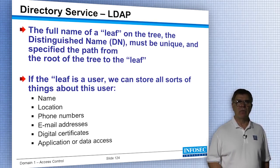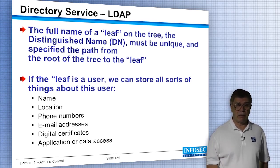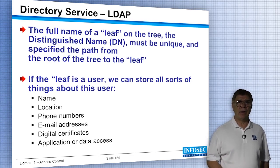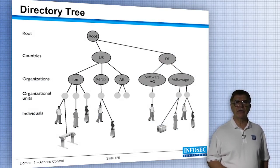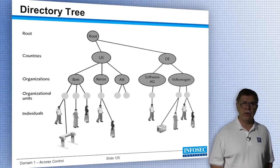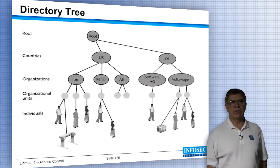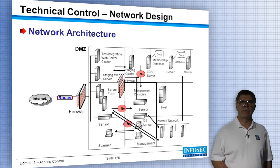What's on the leaf? Name, location, phone numbers, email addresses, your digital certificate, your public key, and what application or data access you have. The tree structure has a root, then country (US, UK), then organizations within that, then organizational units, and within those organizational units — that's where you are, where your printer is, where your workstation is.